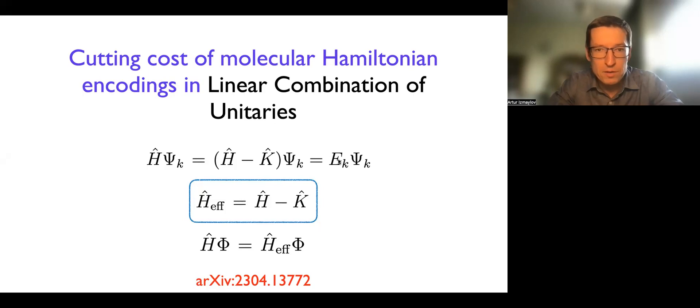You're all familiar that when we encode the molecular Hamiltonian as LCU, then there is a one-norm cost associated with the terms of the Hamiltonian. And in this work, we just modify the Hamiltonian to reduce that cost. So we create this extra K operator that if you remove from H the K part, the effective Hamiltonian still acts the same way on the eigenstates of interest and on the initial state that you prepare usually in the quantum phase estimation.